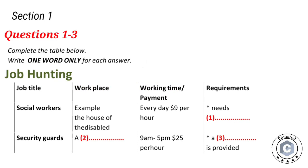Section 1. You will hear a conversation between an agent from the student job center and a student who wants to find a part-time job. First you have some time to look at questions 1 to 3. You will see that there is an example which has been done for you. On this occasion only, the conversation relating to this will be played first.